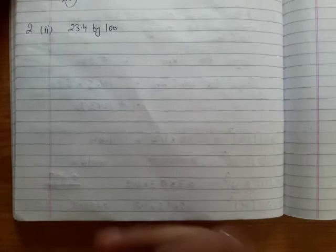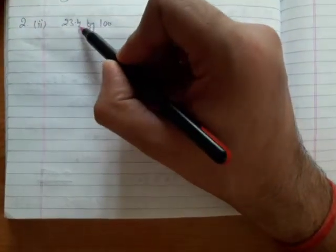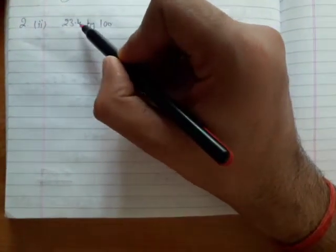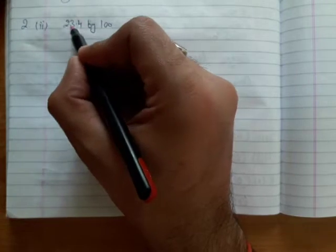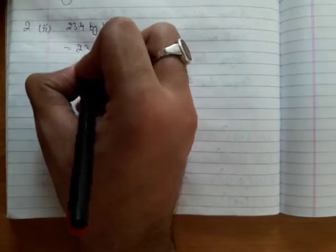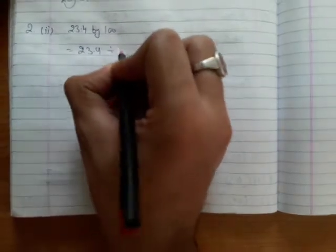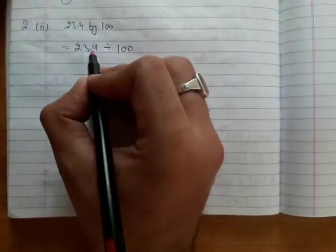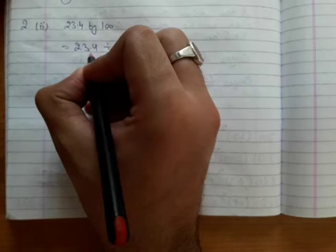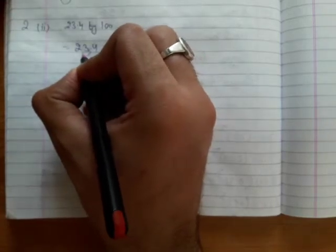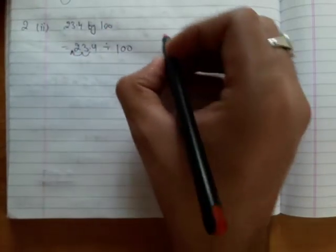When we divide 23.4 by 100, we will directly shift the decimal point two digits to the left side. So one and two - this digit will become...